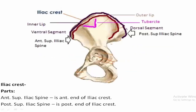The iliac crest has 2 ends — anteriorly and posteriorly. The anterior end is called the anterior superior iliac spine. The iliac crest extends from the anterior superior iliac spine to the posterior superior iliac spine.